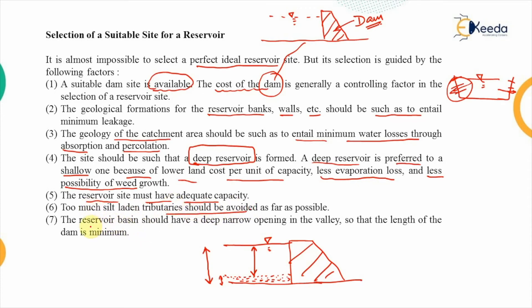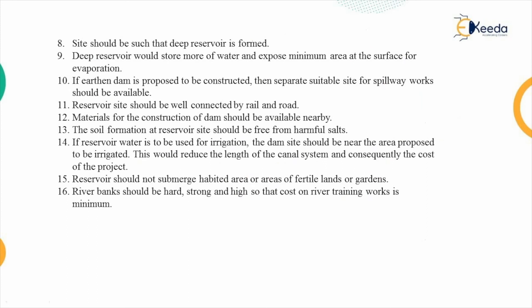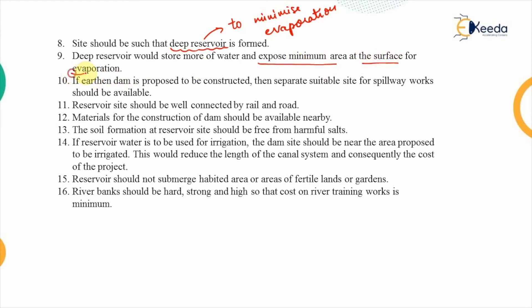The next factor is that the reservoir basin should have a deep narrow opening in the valley so that the length of the dam is minimum. A deep reservoir will store more water and expose minimum surface area, which results in lesser evaporation losses. Minimizing evaporation losses is the main concern with this factor.